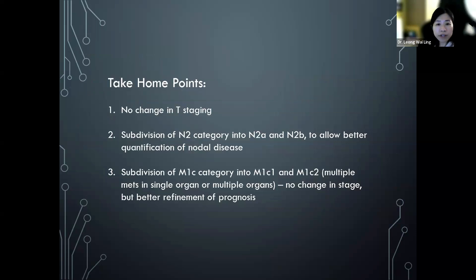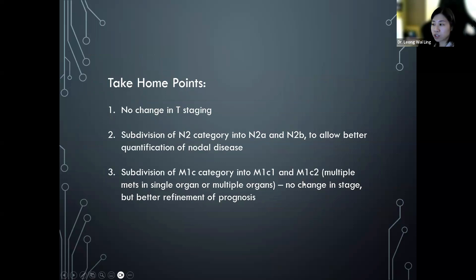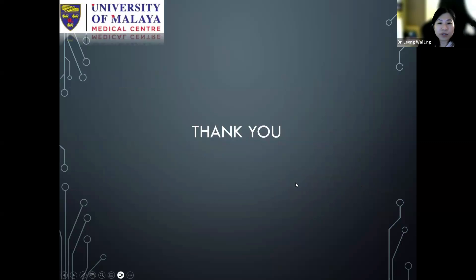The take-home points: In the ninth edition TNM staging for lung cancer, there is no change in T stage. There is a subdivision of the N2 category into N2a and N2b to allow better quantification of nodal disease burden. There is also a subdivision of the M1c category into M1c1 and M1c2 — multiple metastases in a single organ versus multiple organs — and although there is no change in stage grouping for M1c, there is better refinement of prognosis. Thank you very much.